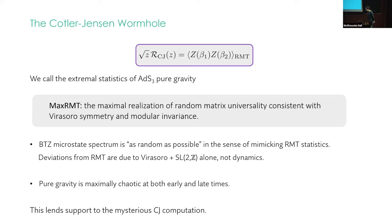Let's say this in a couple more ways. You can, roughly speaking, say the BTZ microstate spectrum in pure gravity is as random as possible in the sense of having the least departure from pure RMT statistics. There are deviations from RMT because of modular invariance, right? R of Z was this piece. There are other spin modes, those subleading corrections at low temperature, but those are all due to Virasoro and SL(2,Z), not due to dynamics.